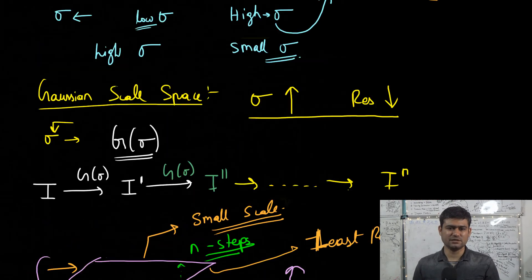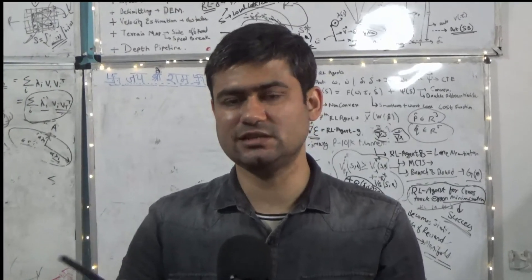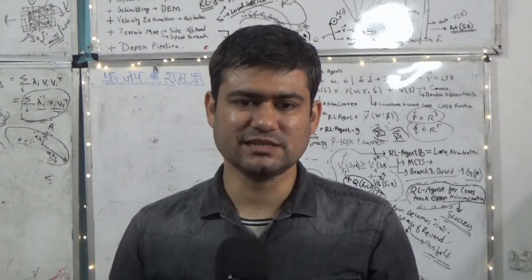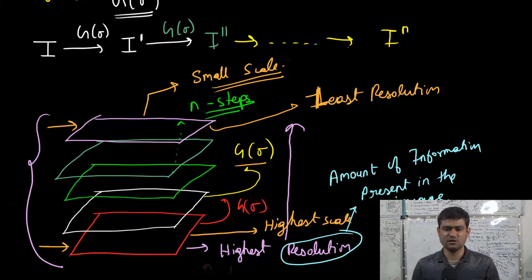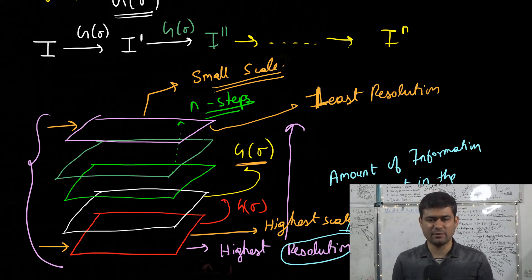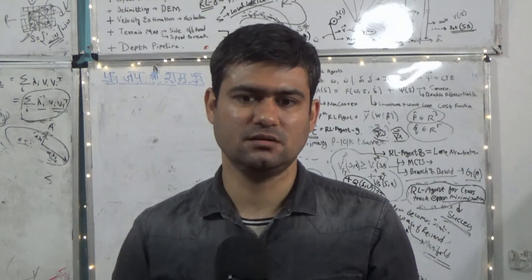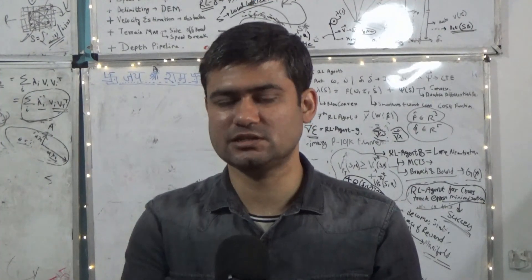To summarize: in the image pyramid, we apply sub-sampling to get the next image. In the Gaussian pyramid, we apply Gaussian blur then sub-sample, controlling both the blur and image size. In the Gaussian scale space, we do not perform any sub-sampling — we just repeatedly apply Gaussian blur to get the next image in the stack at a lower scale, exploiting the idea that Gaussian blur effectively reduces the resolution (measured as information content) of the image.